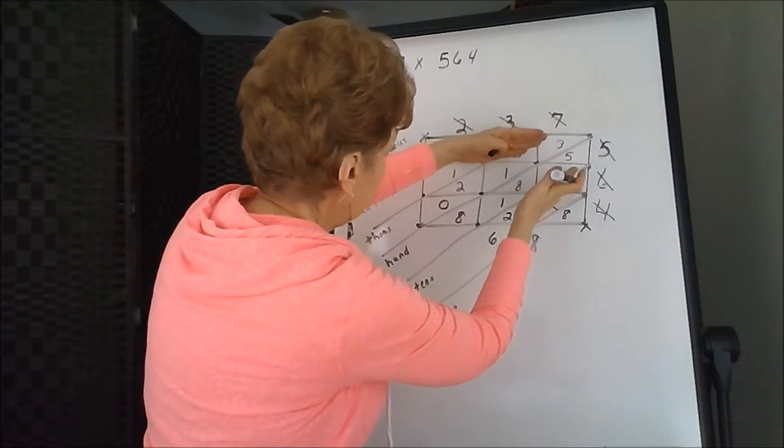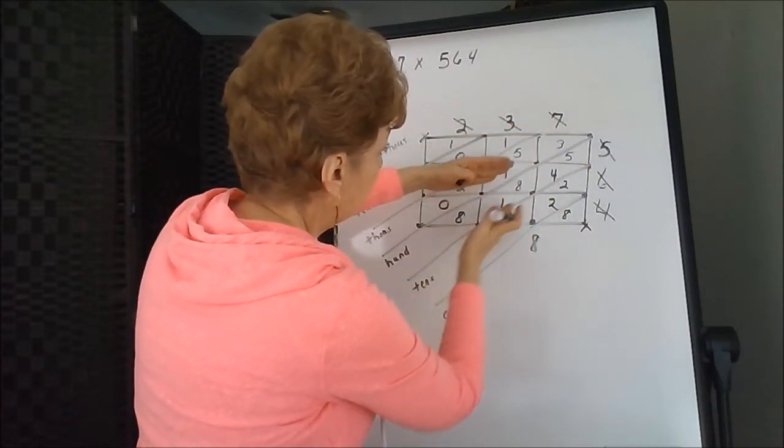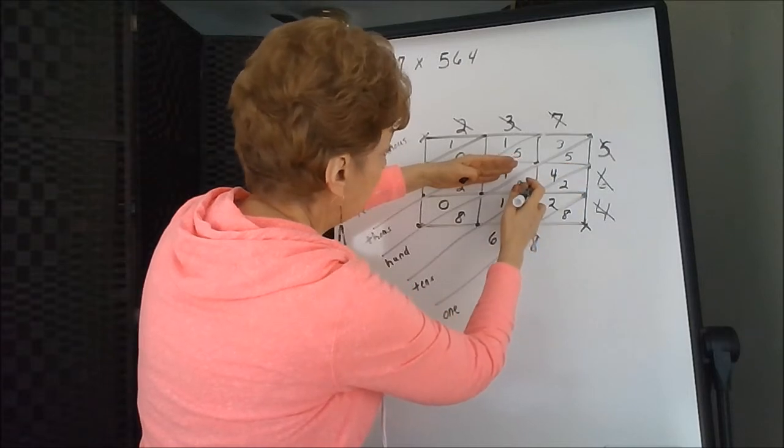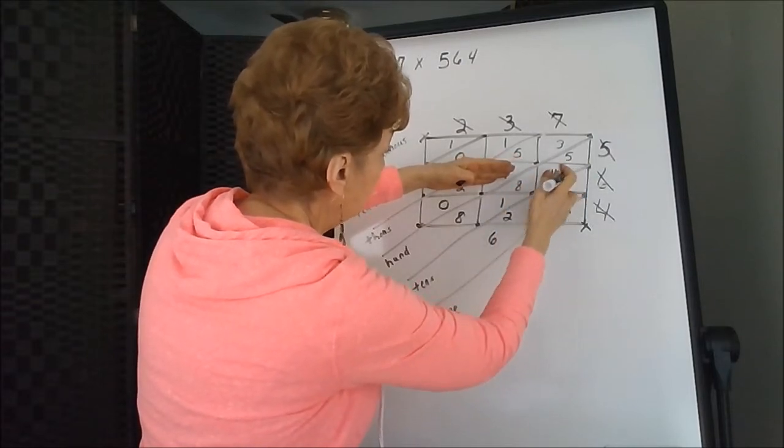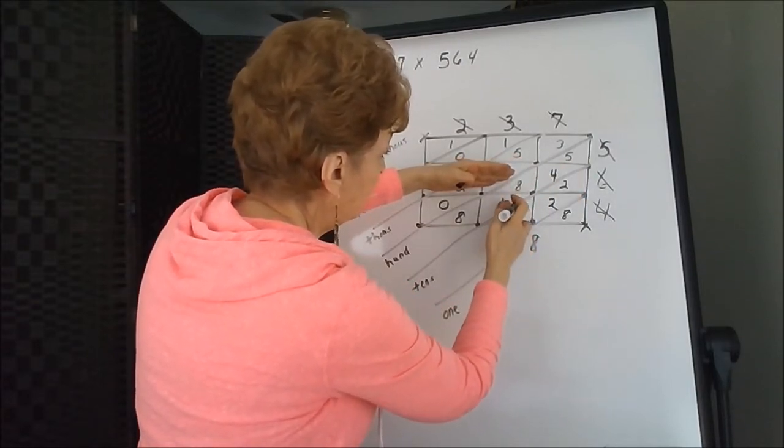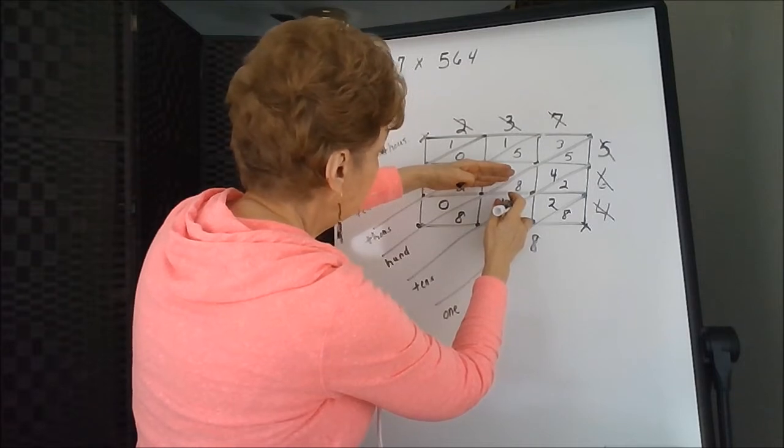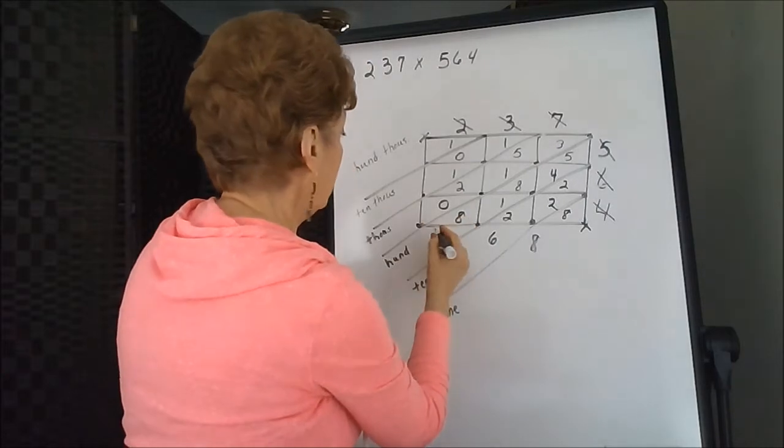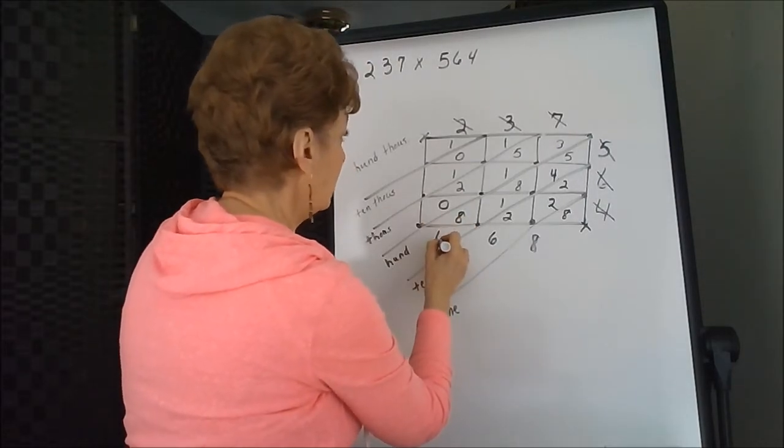In the hundreds column, it gets kind of busy, doesn't it? We have five plus four is nine. Here's eight plus one. There's a nine combination and another nine combination. Nine plus nine is eighteen, and eight more is twenty-six. Put down the six, carry the two.